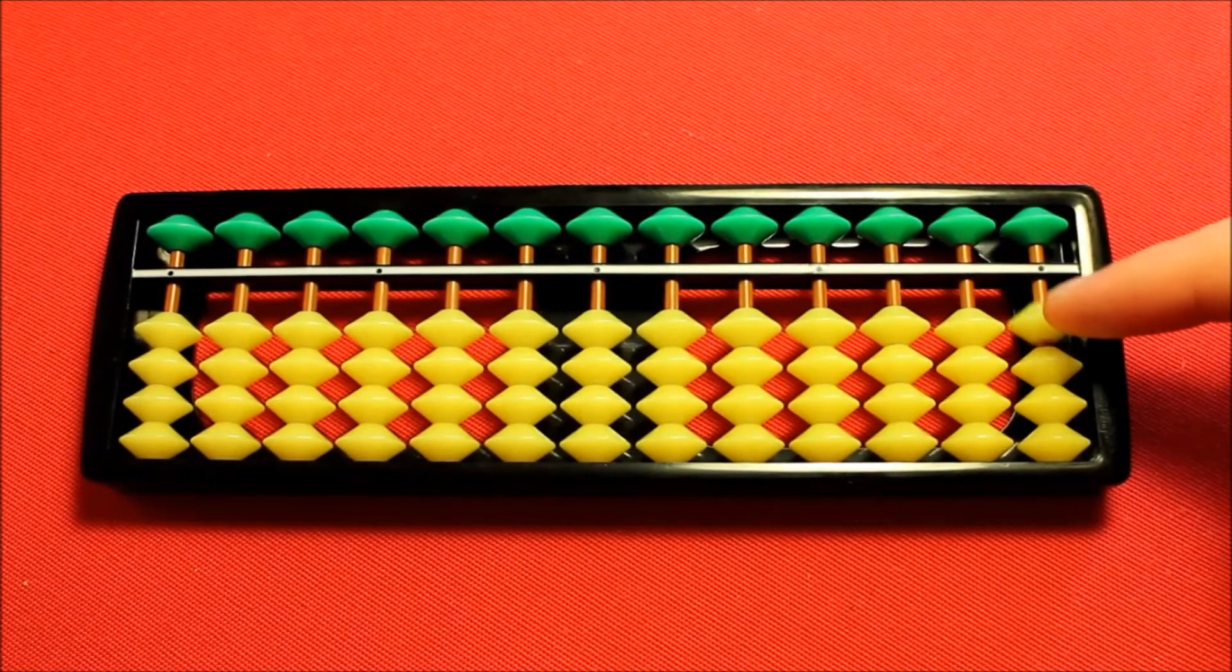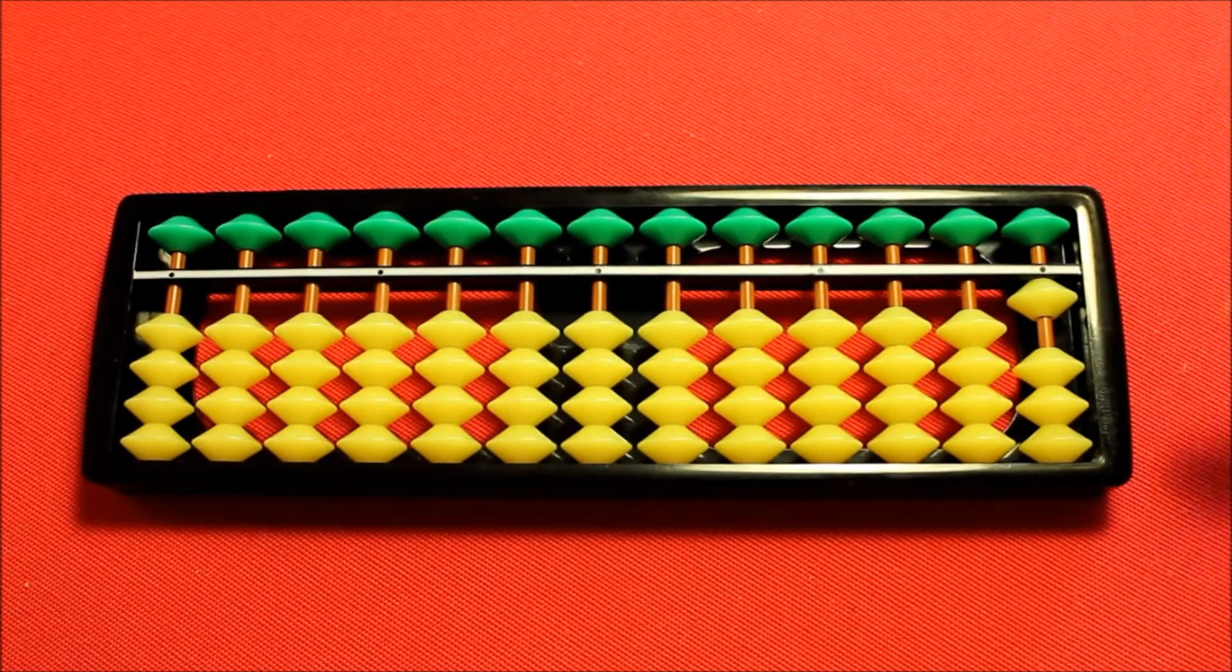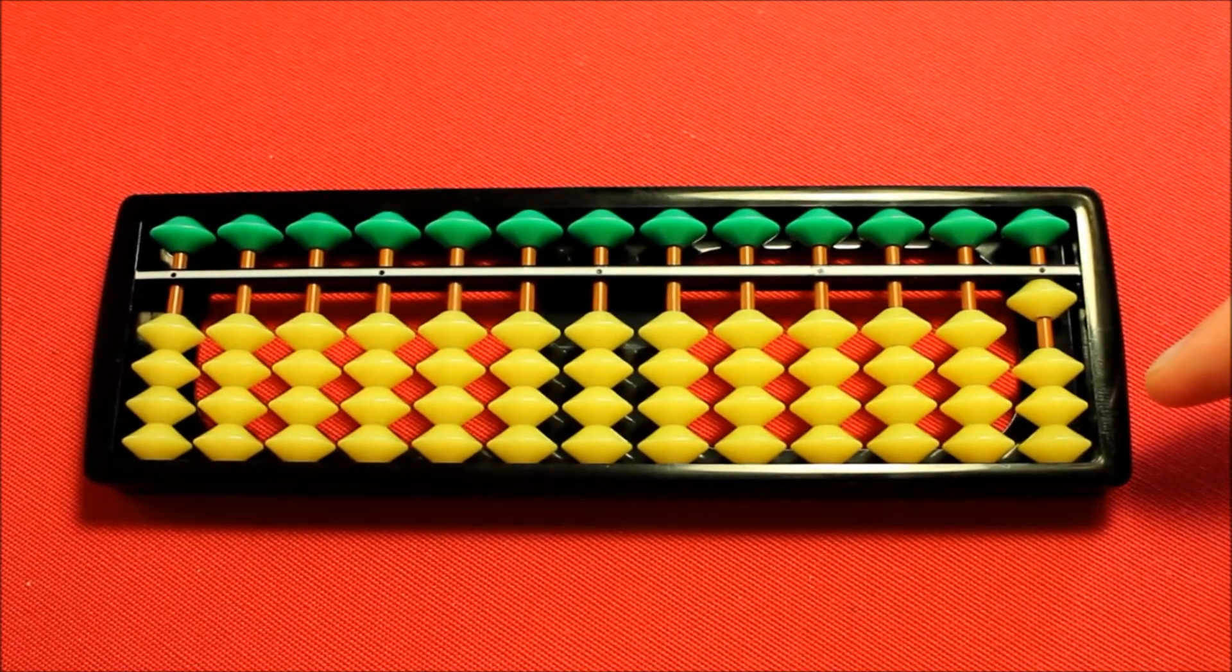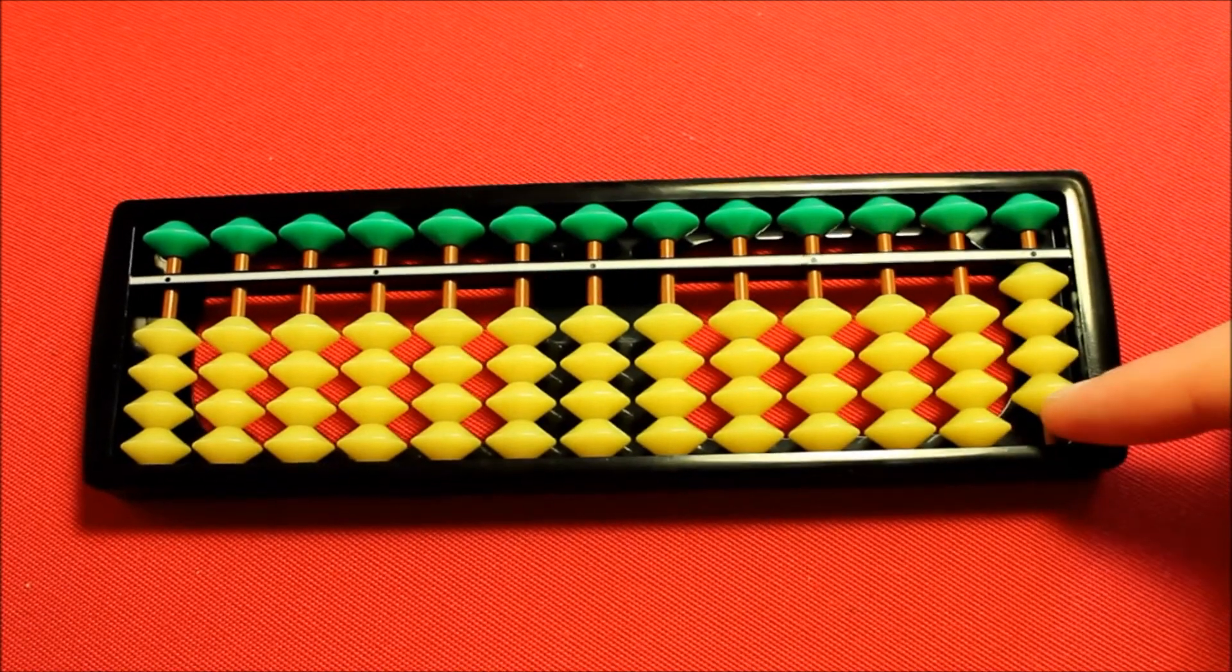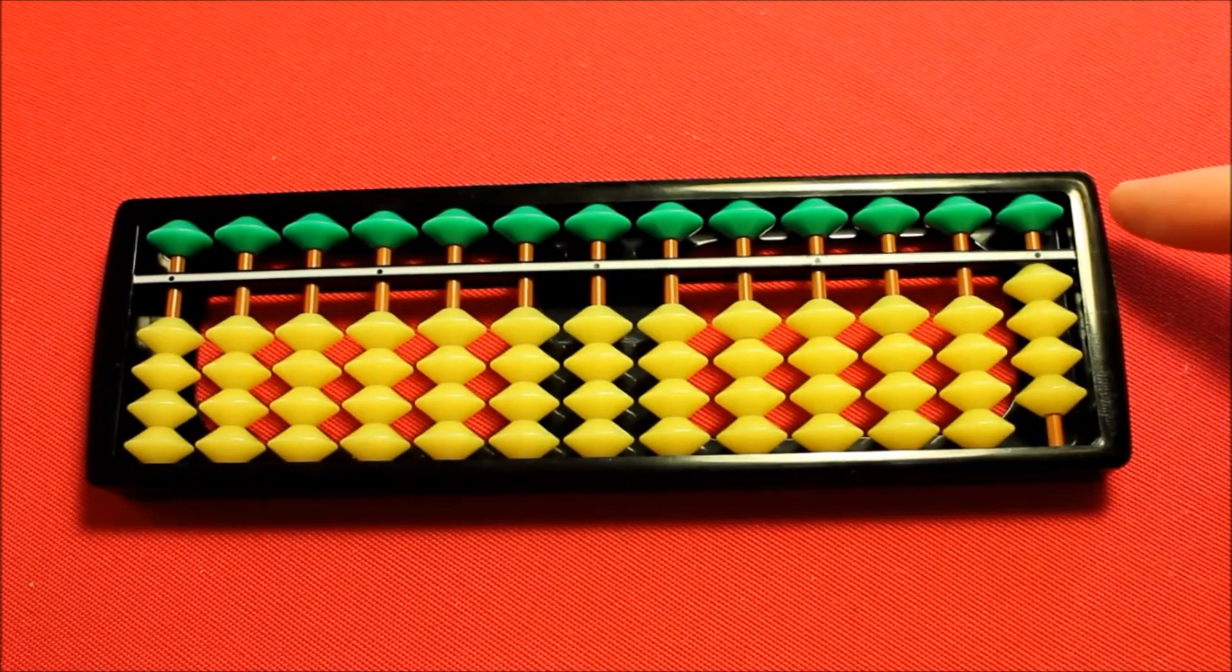Moving on to three and let's start with one on there. Again sometimes you'll get lucky. One plus three equals four and the way that you do that is you simply move the three earthly beads up.